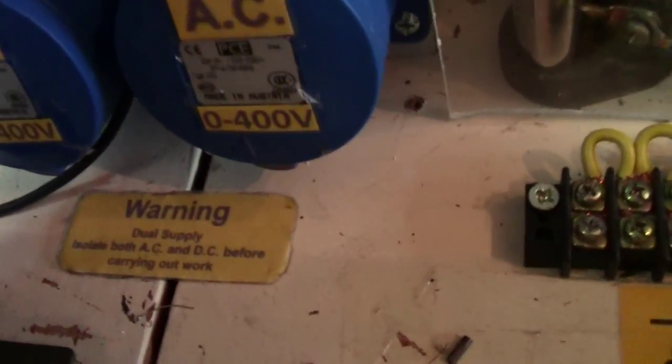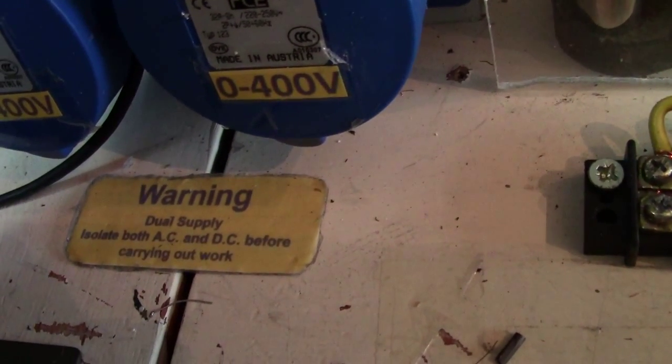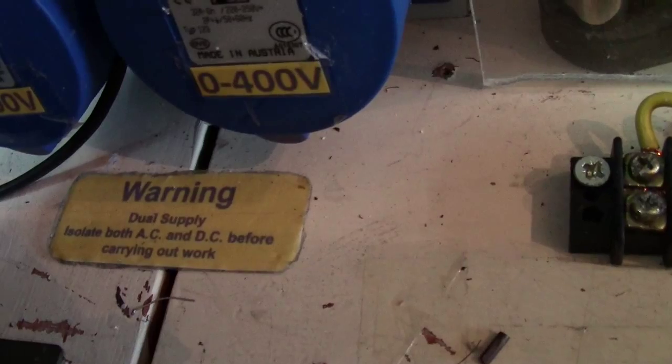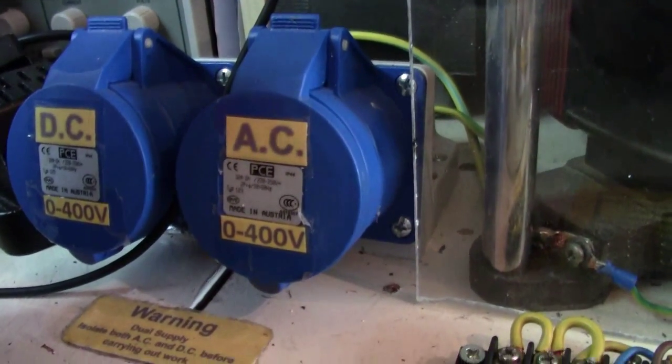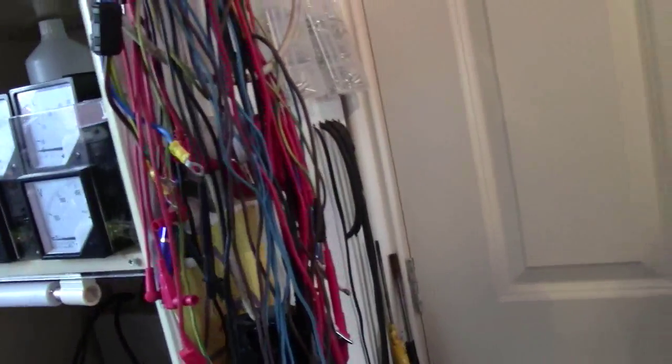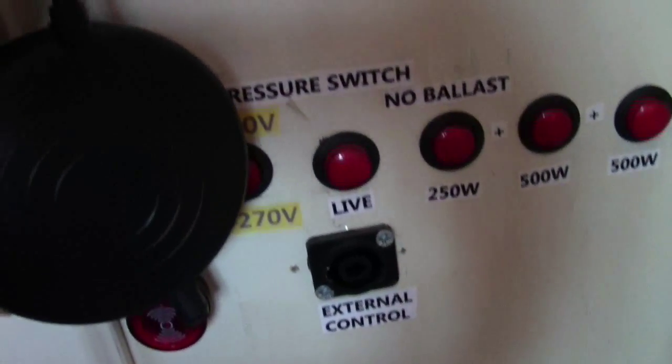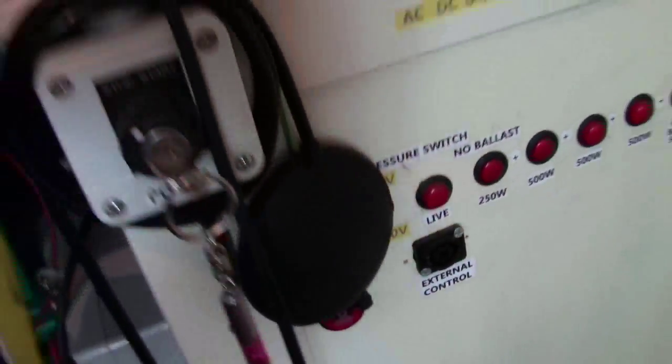Got a thing here that says 'Warning dual supply, isolate both AC and DC before carrying out work.' When it's on you'll see my red light flashing. Yes, it's covered by wires, but it's a strobe, it flashes. And there's also things over here, signs to tell people what and how. Generally people shouldn't be using your stuff unless they've been taught by you how to do it.